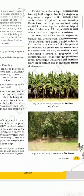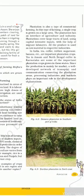Plantation is also a type of commercial farming. Here, one single type of crop is grown continuously. In India, important plantation crops include tea, coffee, rubber, sugarcane, and banana. Tea is grown in Assam and North Bengal; coffee in Karnataka. Since production is mainly for the market, a well-developed network of transport and communication connecting plantation areas, processing industries, and markets plays an important role in the development of plantation farming.